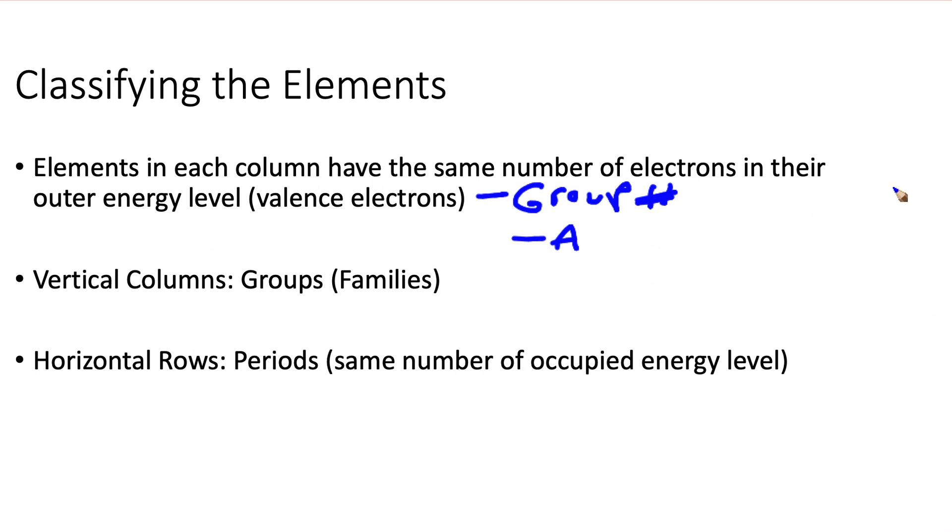Vertical columns on the periodic table are groups or families. And horizontal rows are periods. And they have the same number of occupied energy level.